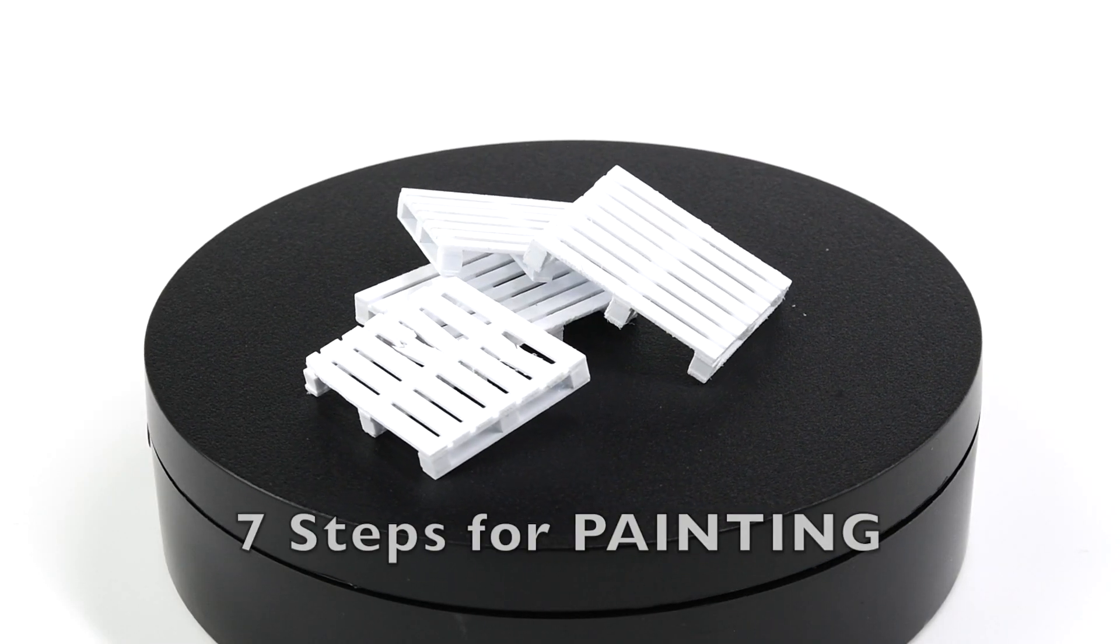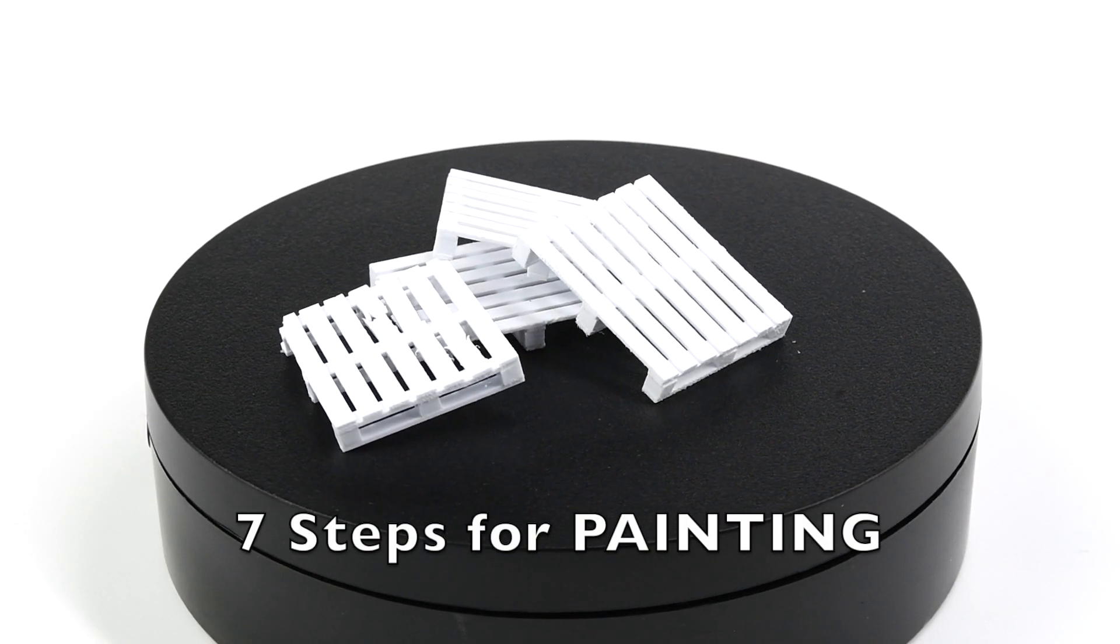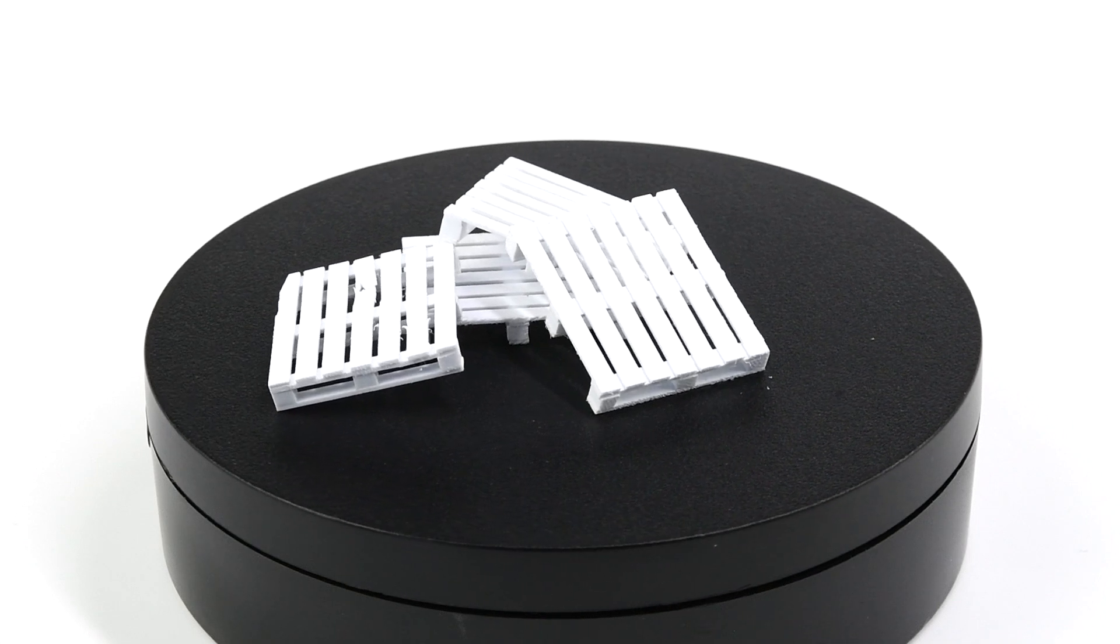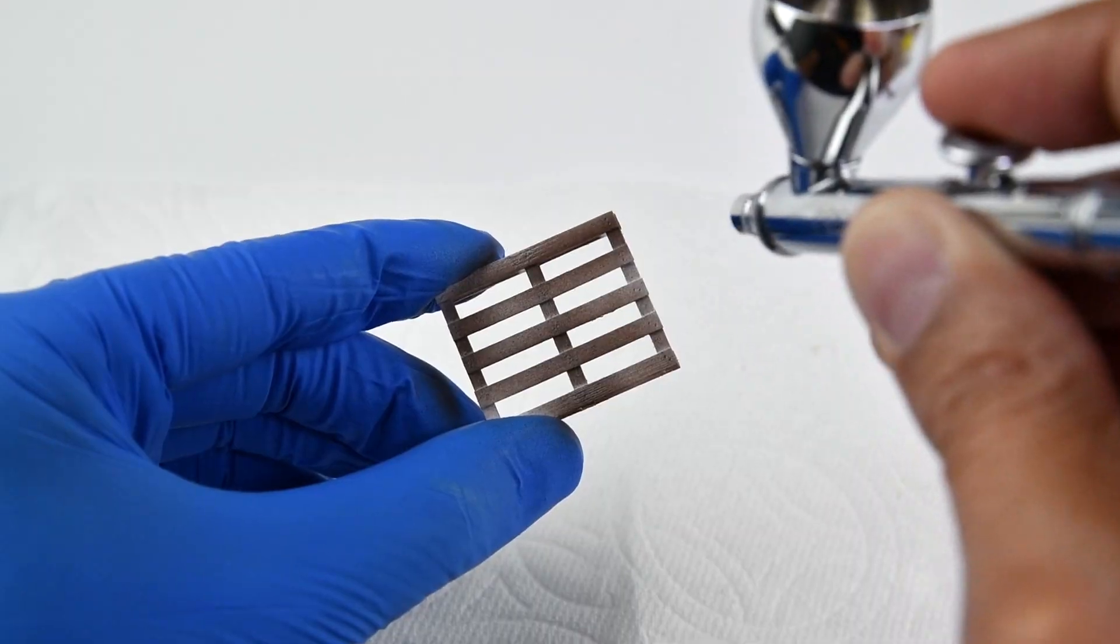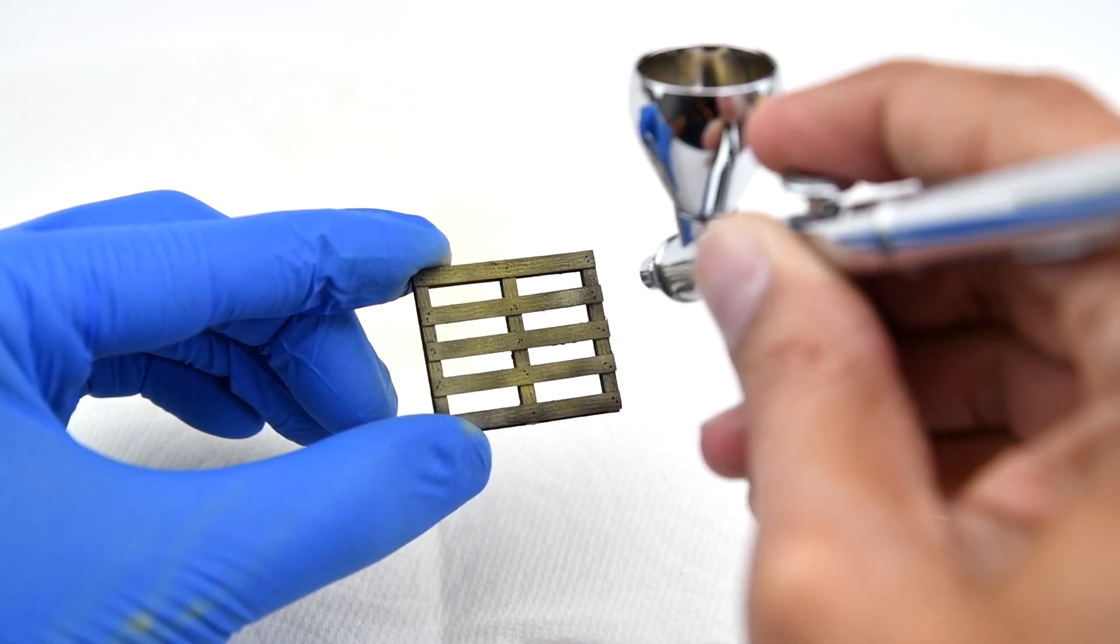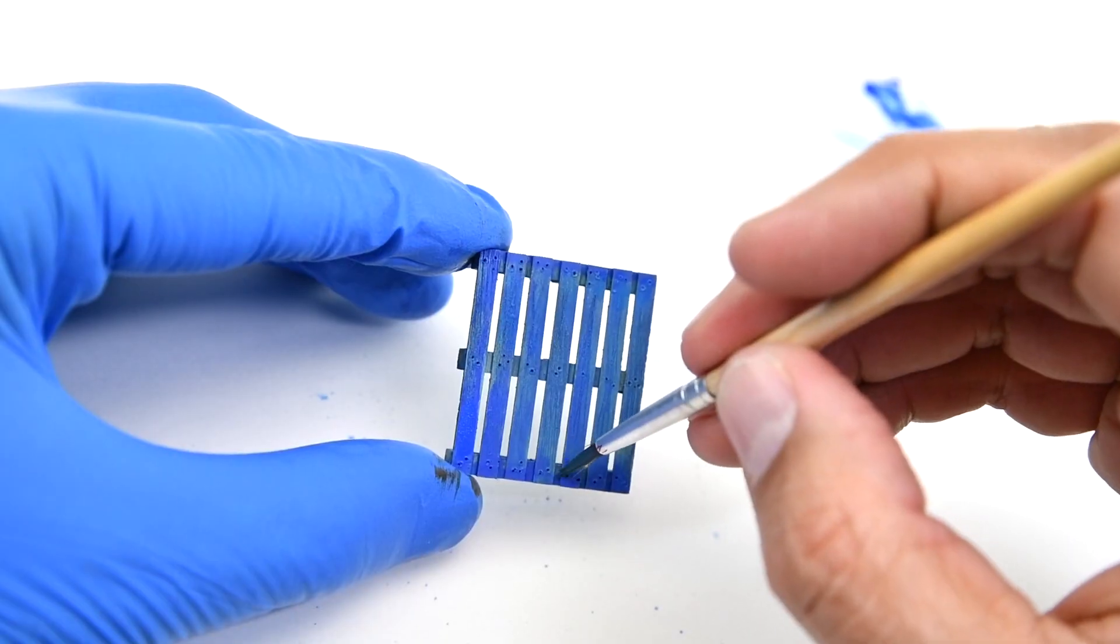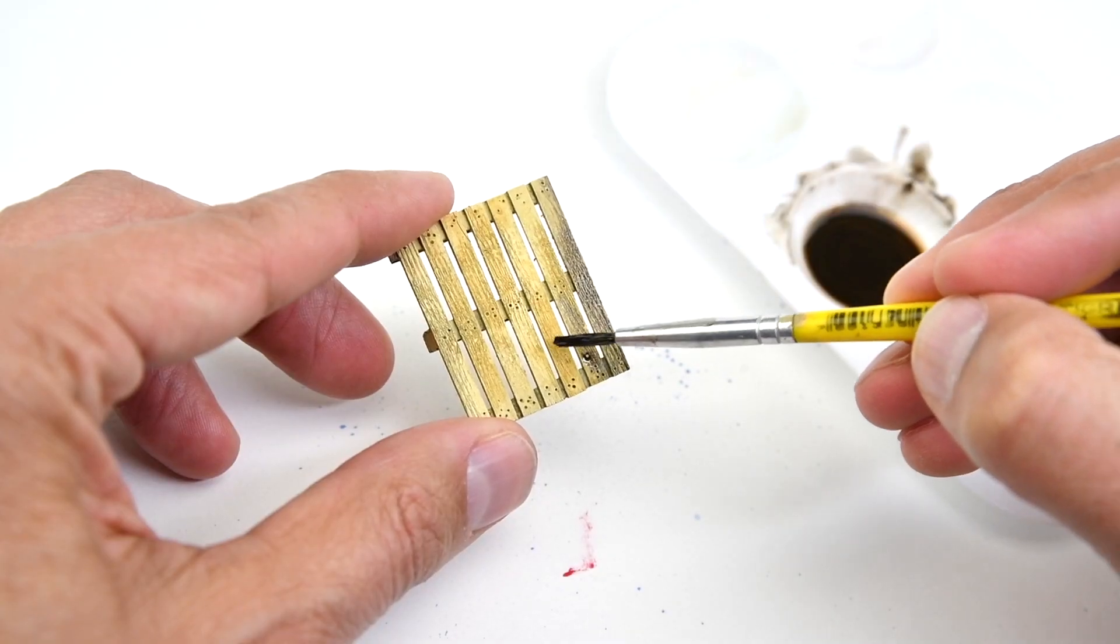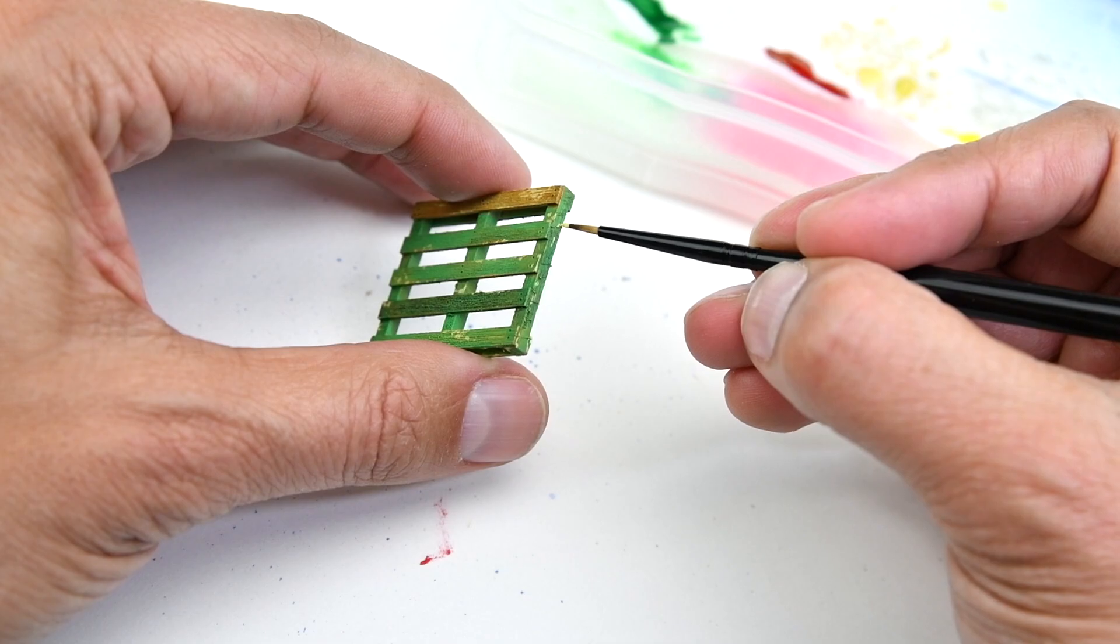On today's show I will share my seven steps for painting the pallets scratch built out of polystyrene strips. We will cover priming, foundation, base pinewood tone, adding color, tonal variation for additional contrast, chipping and blending.